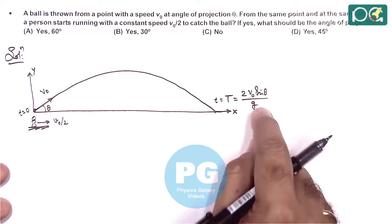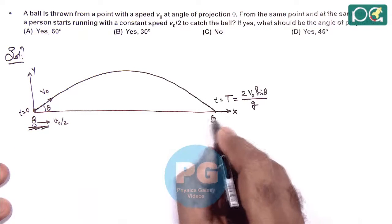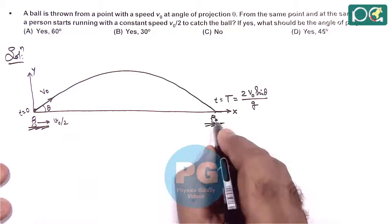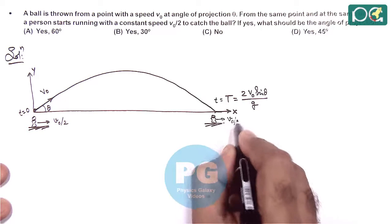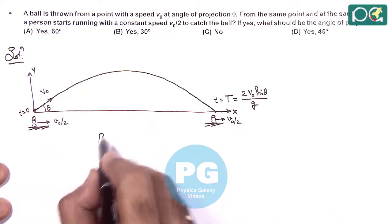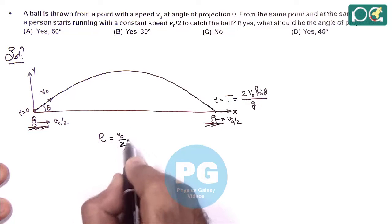In this time, if the boy has to catch the ball, he has to reach this position by continuously running at speed V-naught by 2. So the distance travelled by the boy has to be equal to the horizontal range of projectile, and this should be V-naught by 2 times t.